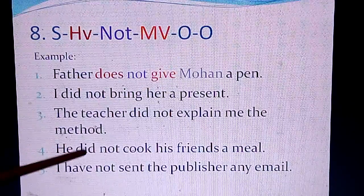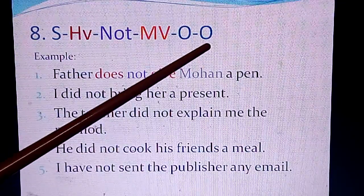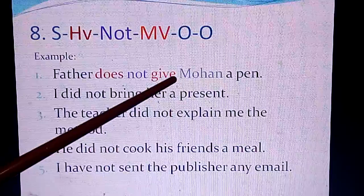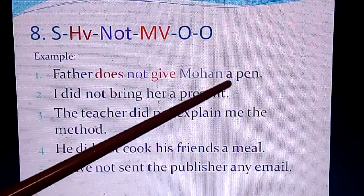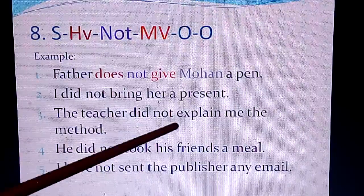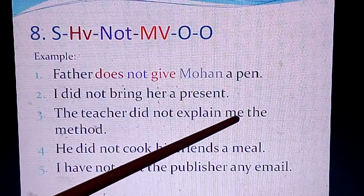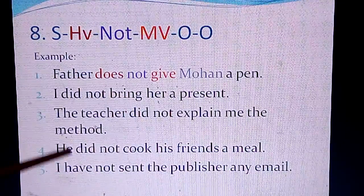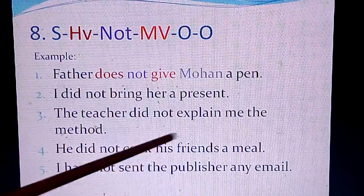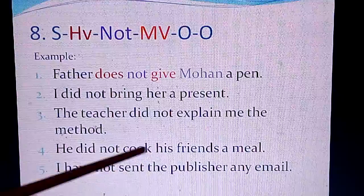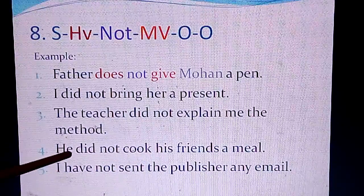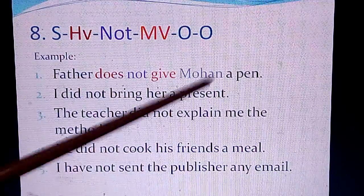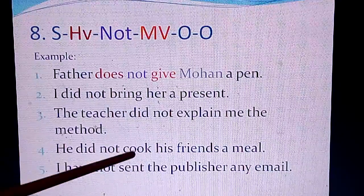Consider: 'The teacher did not explain me the method.' What did she not explain? — the method. Who did not explain? — the teacher. Father does not give whom? — Mohan. What? — a pen. Similarly, 'He did not cook his friends a meal': who did not cook? — he. For whom? — his friends. What? — a meal.